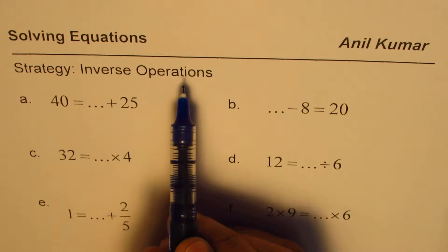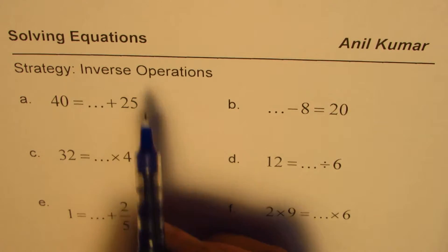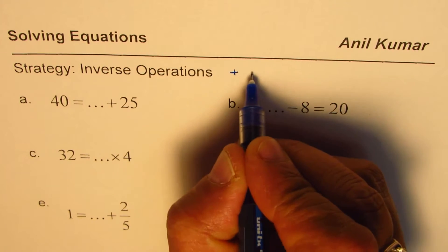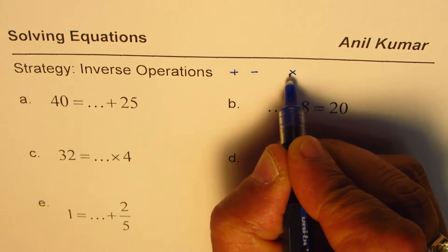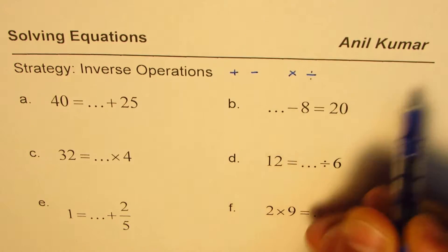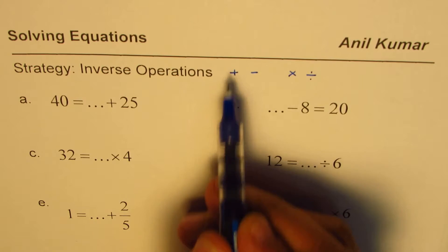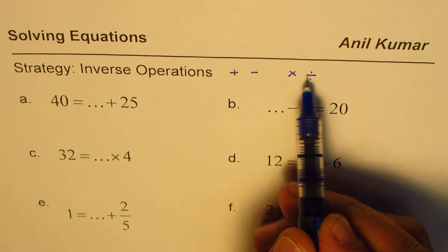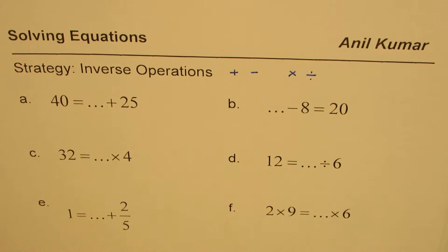We may say reverse operation also. Inverse of plus will be minus, inverse of multiplication will be division, inverse of minus will be plus and inverse of division will be multiplication. That way they nullify each other's effect and help us to solve the equations.